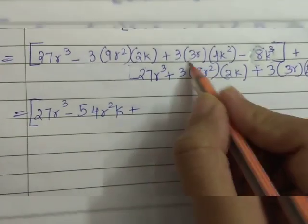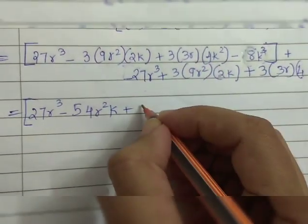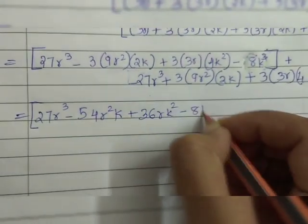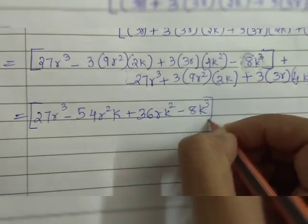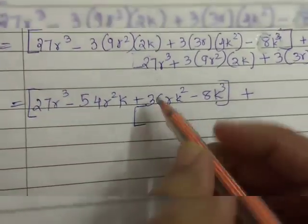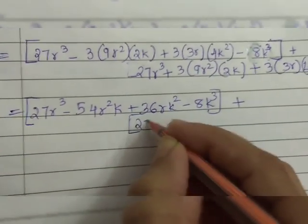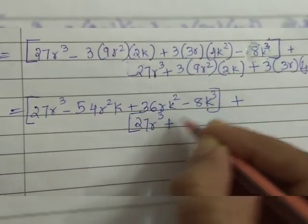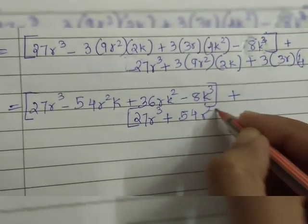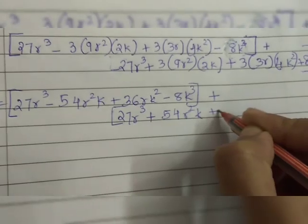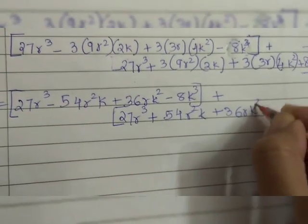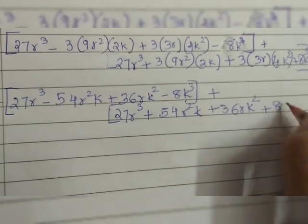The product of these terms gives 54, then the product for the next term gives 36, and minus 8k. Close the bracket. Now the second bracket — we do the same thing and find the product: 54r²k, then the product gives 36rk², plus 8k³.